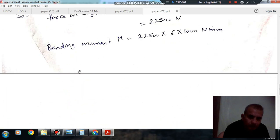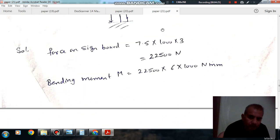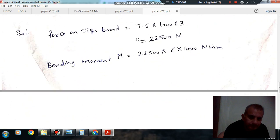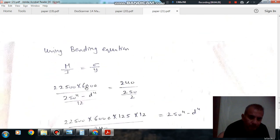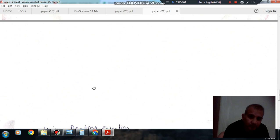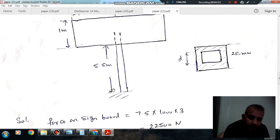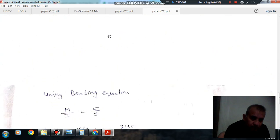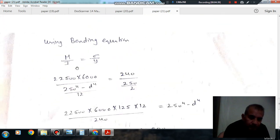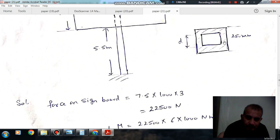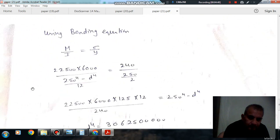M is 22,500, L is your 6,000, 5.5 plus 0.5, 6,000. And I is your, if D is the dimension, then I will be 250^4 minus D^4 divided by 12.